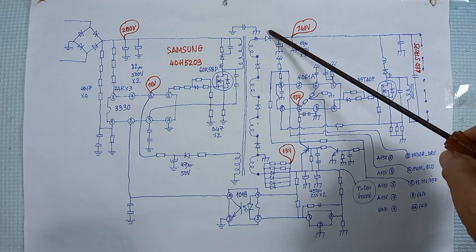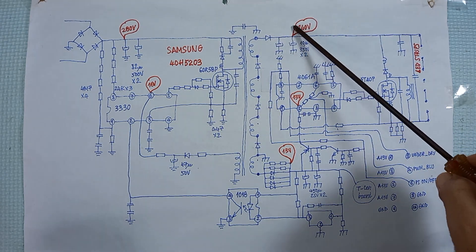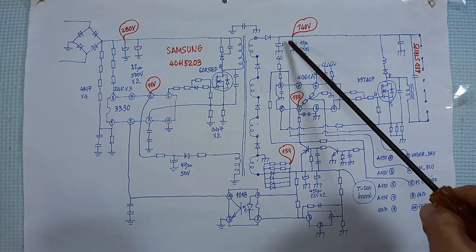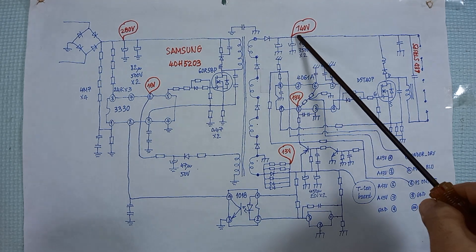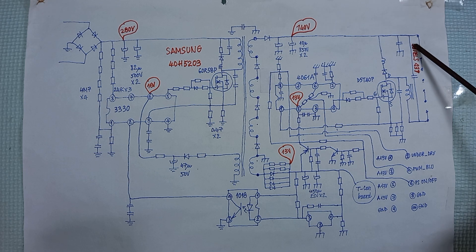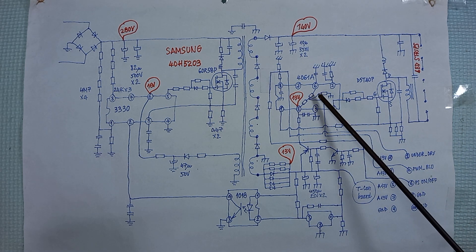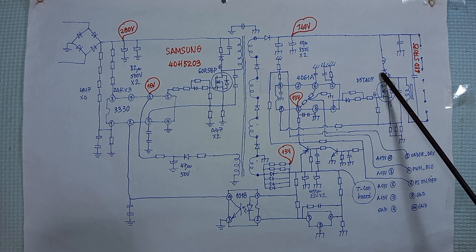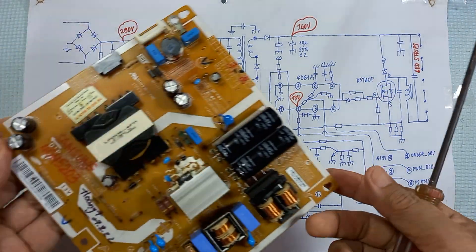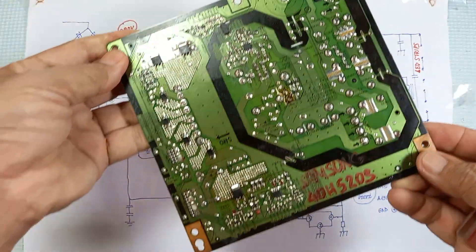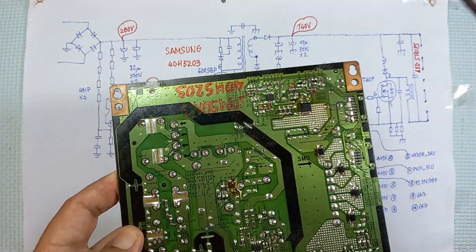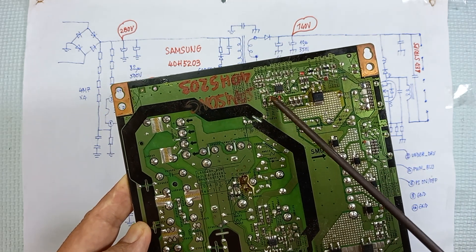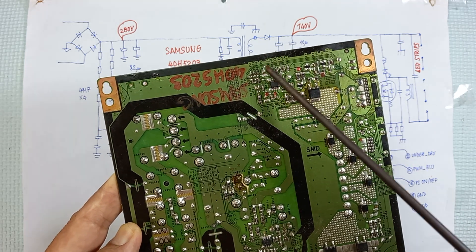Some diodes will rectify the voltage to 140 volts and filter by the two capacitors to supply power for the LED strips to light up. This IC, this MOSFET, and some components around here form the booster circuit.